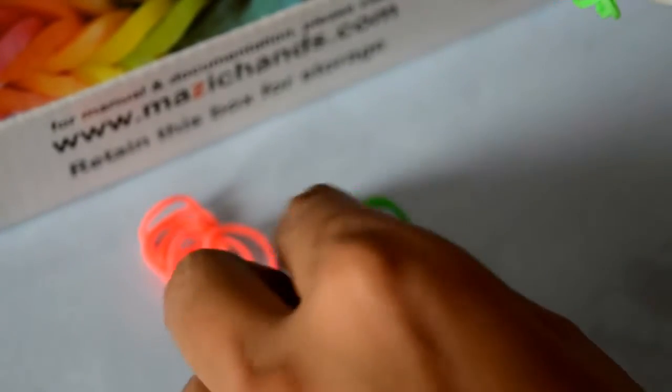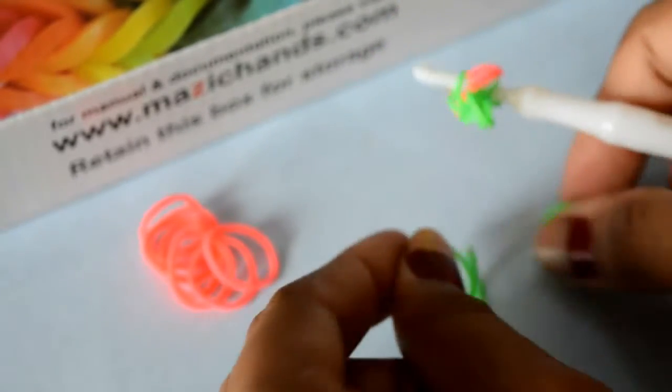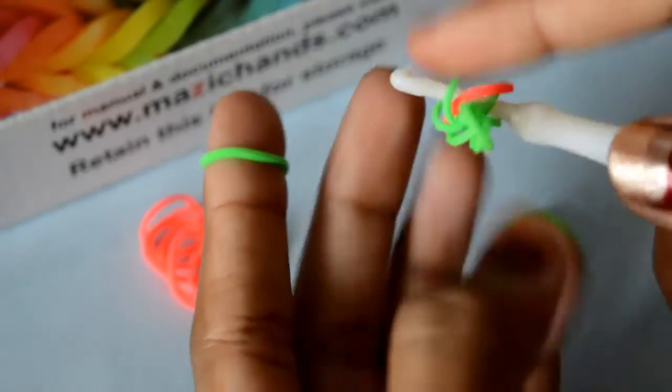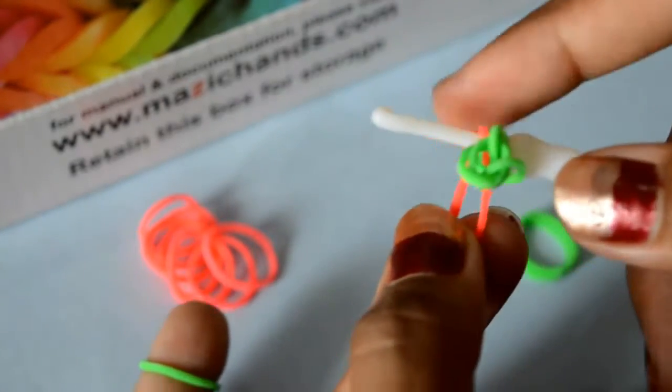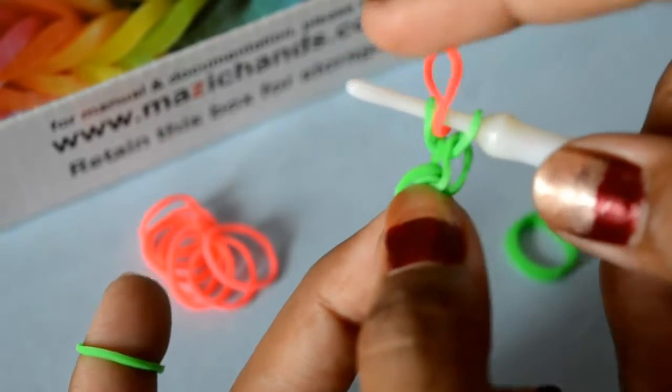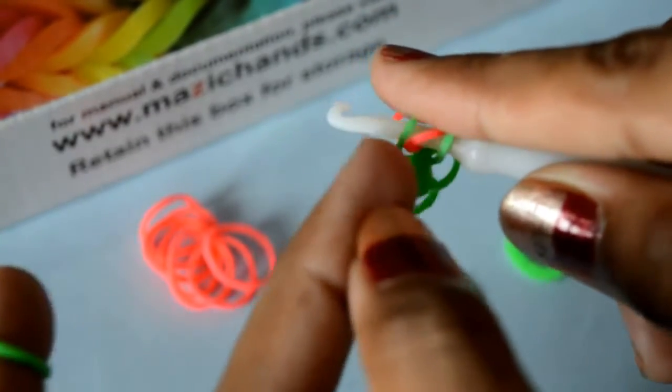Take your next green color of a band. Now to this rubber band, make it down. Make sure this rubber band should be in between to this green rubber band.